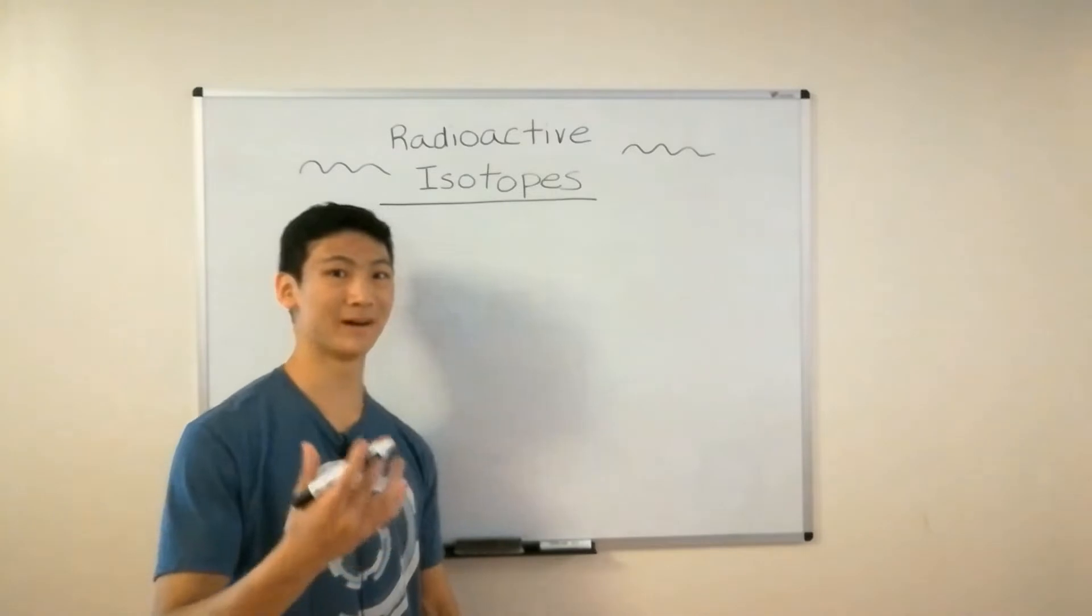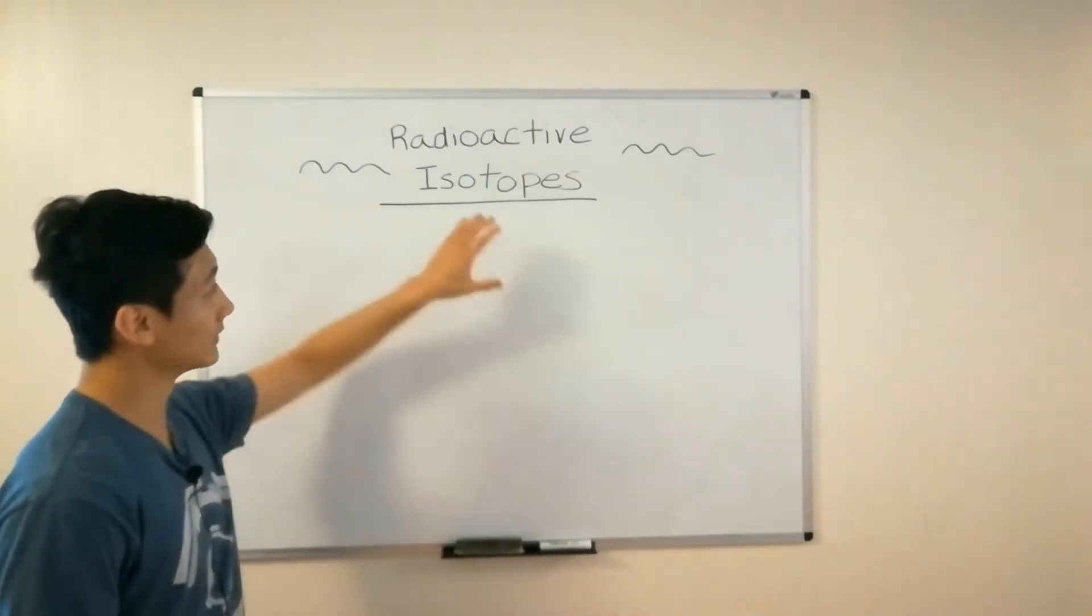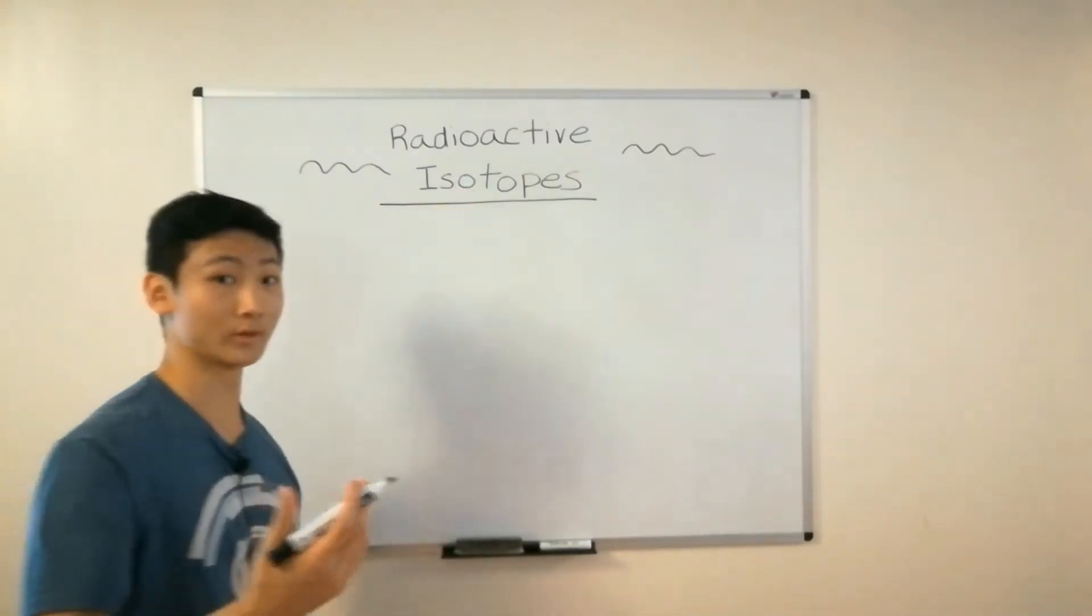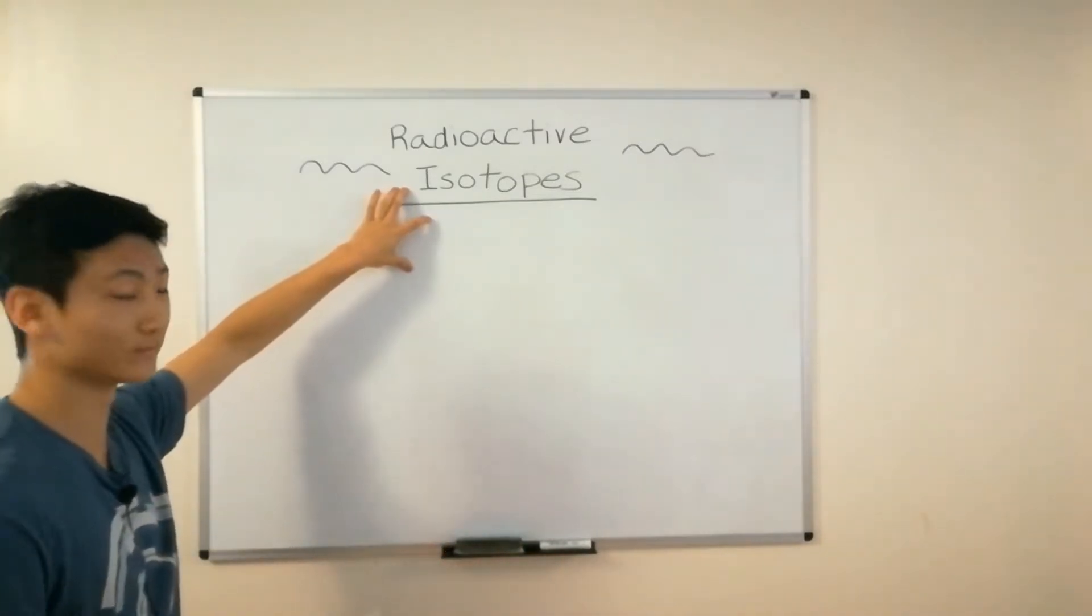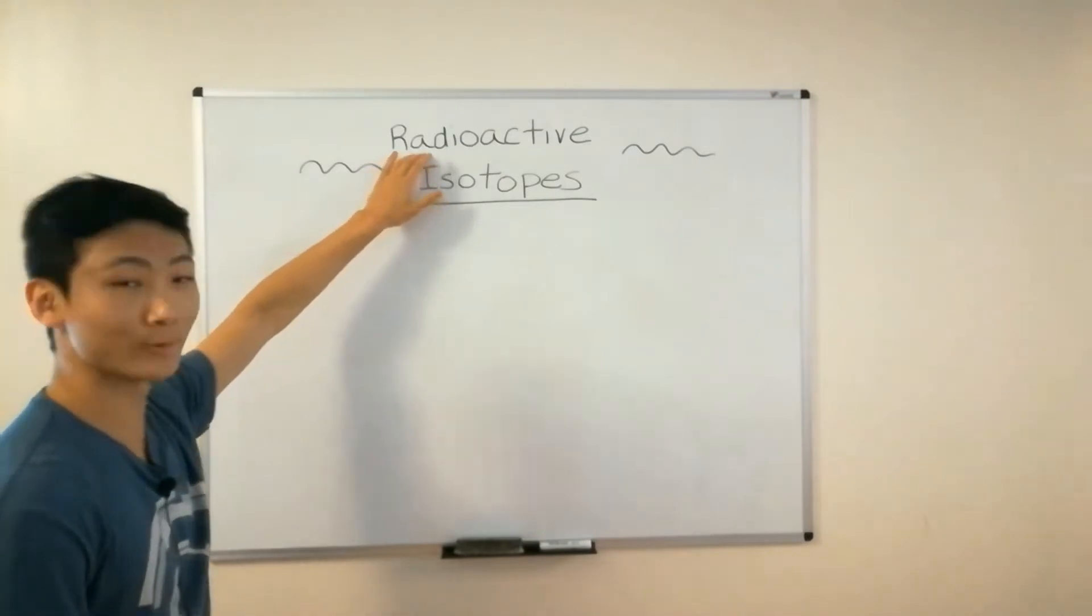What's up guys? Today let's talk about radioactive isotopes. So isotopes we've said before, they're just atoms of the same element that have different numbers of neutrons. Simple, right? What makes them radioactive though?